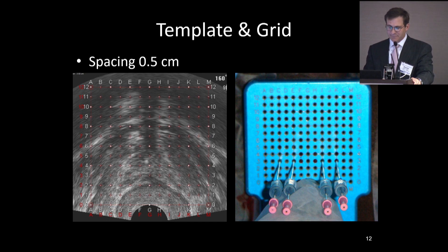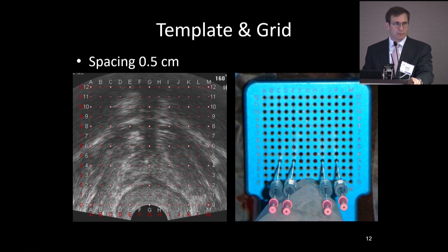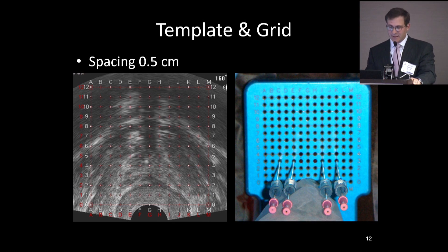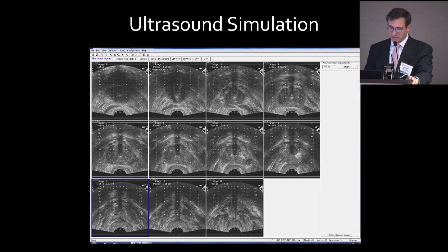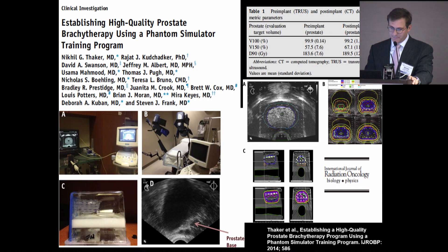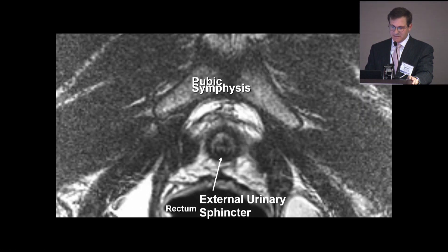From a template grid, we space that at 0.5 millimeters. This is what your template grid pattern will look like. At the apex, you've got the head of the puborectalis muscle with the external sphincter in front. Imagine this image compared to what I was showing before — that is why we've moved toward MRI simulation, which allows you to more accurately localize all of the tissue.